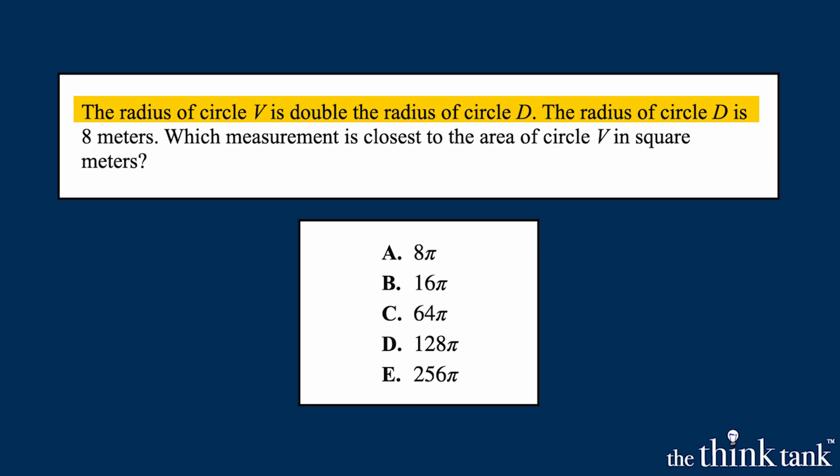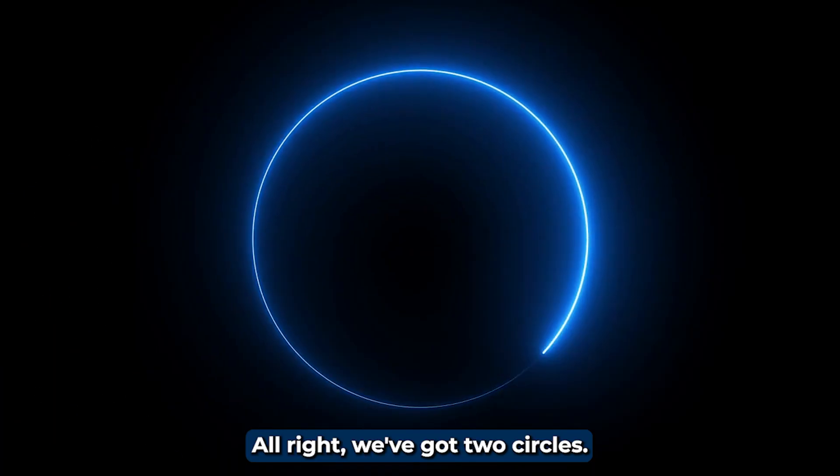The radius of circle V is double the radius of circle D. The radius of circle D is 8 meters. Which measurement is closest to the area of circle V in square meters? Let's go. All right, we've got two circles.